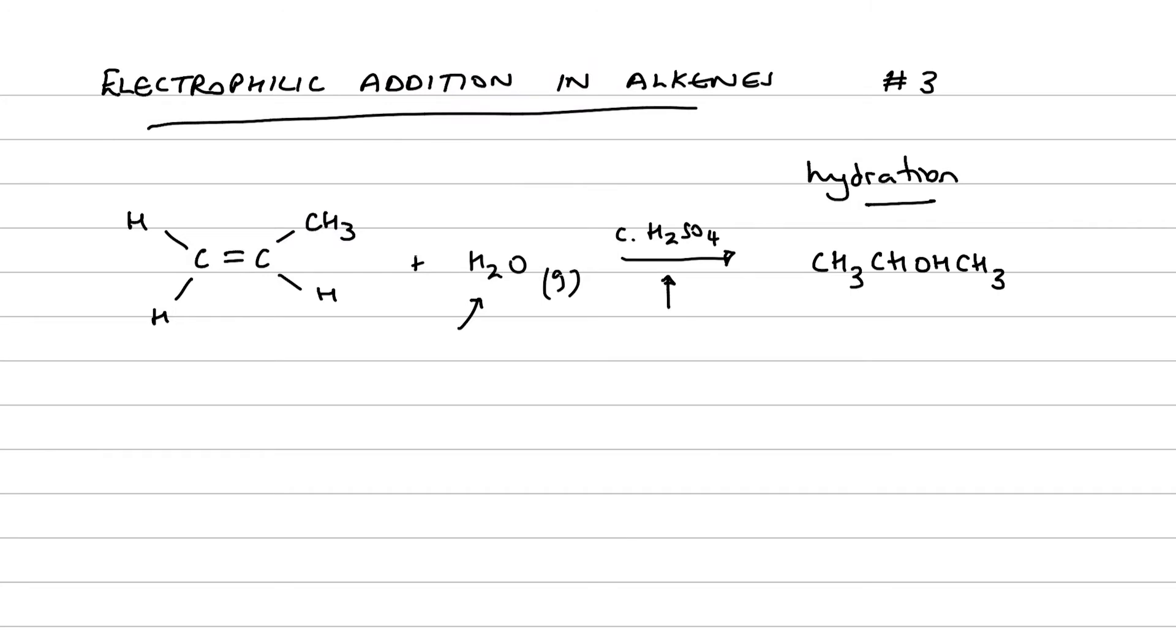The electrophile is the oxonium ion H3O+. How do we get an H3O+ ion? Well, our catalyst is an acid. It's very strongly acidic. So we know that H2SO4 readily dissociates to form hydrogen ions and the hydrogen sulfate ion.